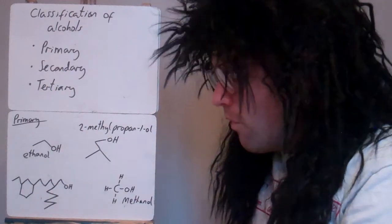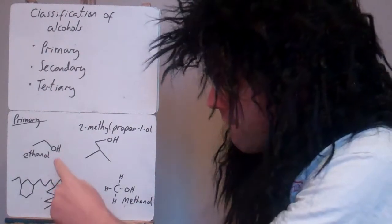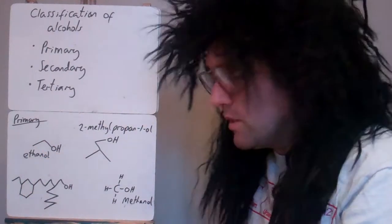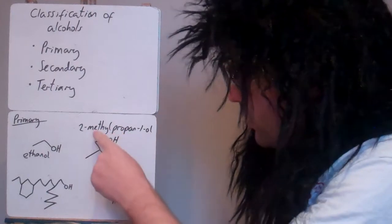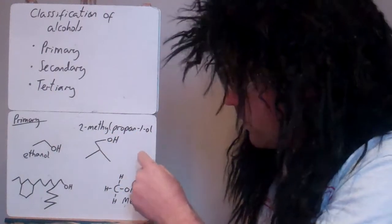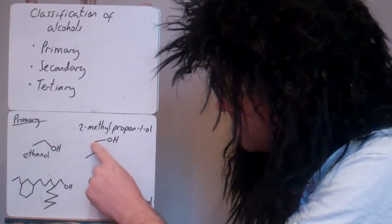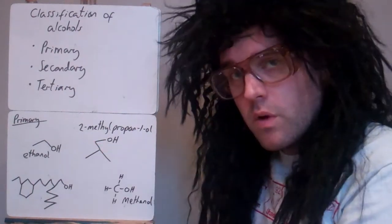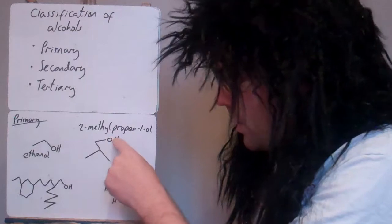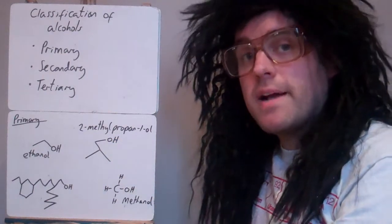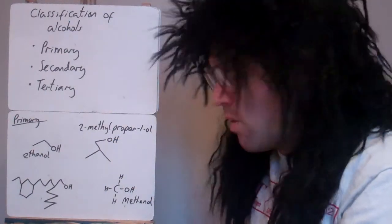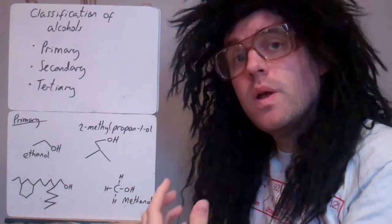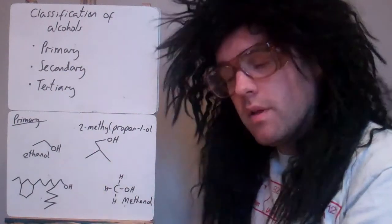These are all examples of primary alcohols. If we look at ethanol here, this carbon is only attached to one other carbon — that makes it primary. Here we've got 2-methylpropan-1-ol; the carbon that the OH is attached to is only attached to that one carbon there. So the carbon attached to the OH can be attached to a maximum of one other carbon if it's primary. This one, methanol — the carbon attached to the OH isn't attached to any carbon, so that one's definitely primary.